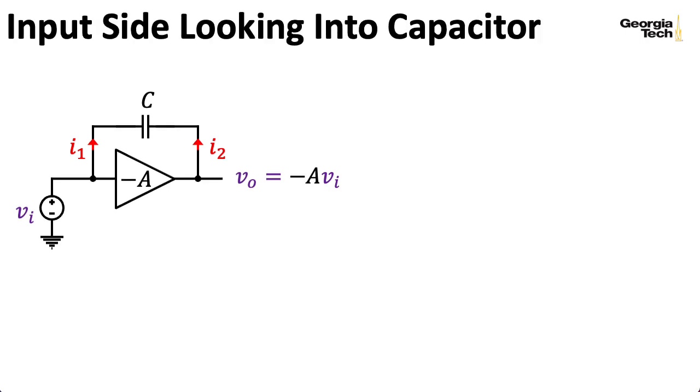I'd like to compute the impedance looking into the left side of the capacitor. Notice that I'm very careful to draw it so we're looking into the left side of the capacitor. We're not looking at the input impedance looking in this direction. Whatever input impedance the amplifier has, that's something else. So we can say that I1, the current flowing into the right side of the capacitor, is VI minus VO over the impedance of the capacitor, which is 1 over capital CS.